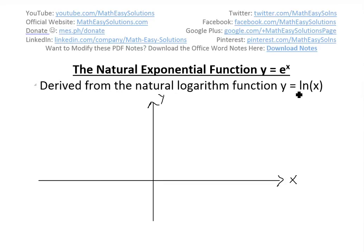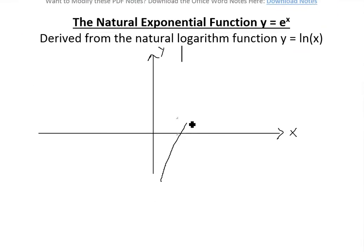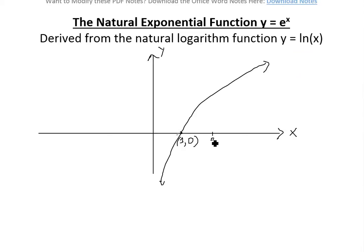If we graph the natural log function like I showed in my earlier video, it looks something like this: it goes to negative infinity as you approach zero from the right side, and then it approaches infinity when you go to infinity on the right side. A key point is at x equals one, y is zero, so the point is (1, 0). Another key point is at the number e, where the point is (e, 1). So this is just basically ln of x.